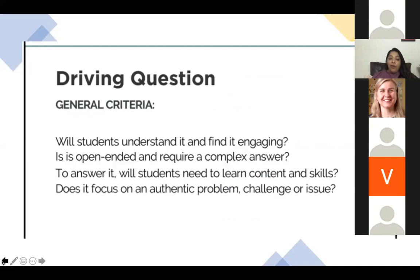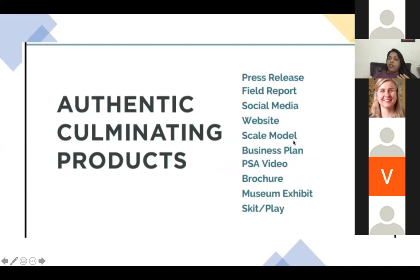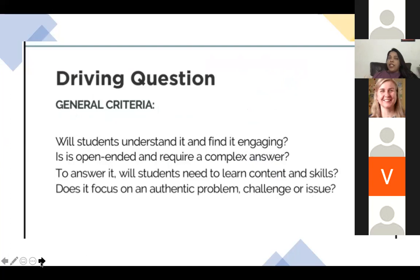Possible culminating products — not limited to these — could include: a field report, social media, a class website, a scale model, a business plan, a PSA video, a brochure, a museum exhibit, a skit, a play, an e-portfolio, or a student-led conference. There could be multiple areas where students share their final product. These are the four aspects — the task, assessment as process, contextualization, and peer and self-evaluation — which I've shared as elements of authentic assessment.